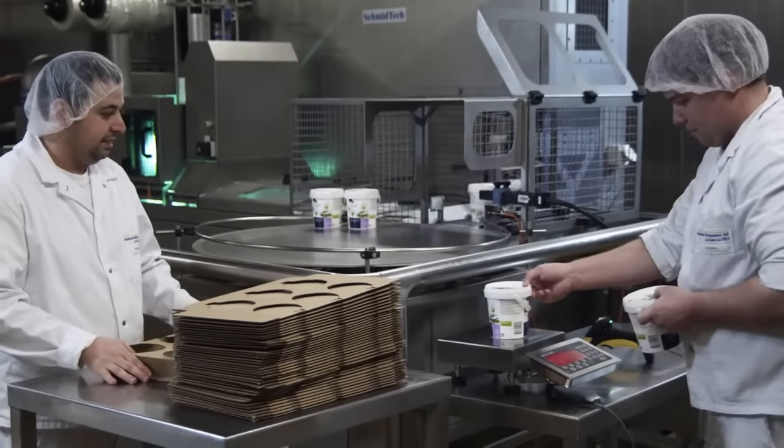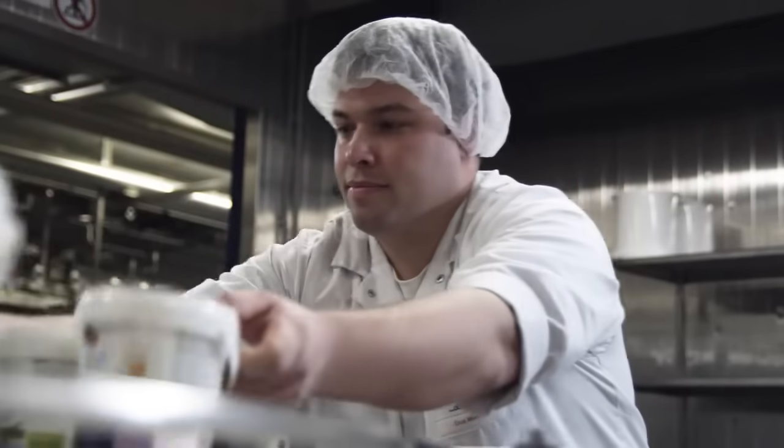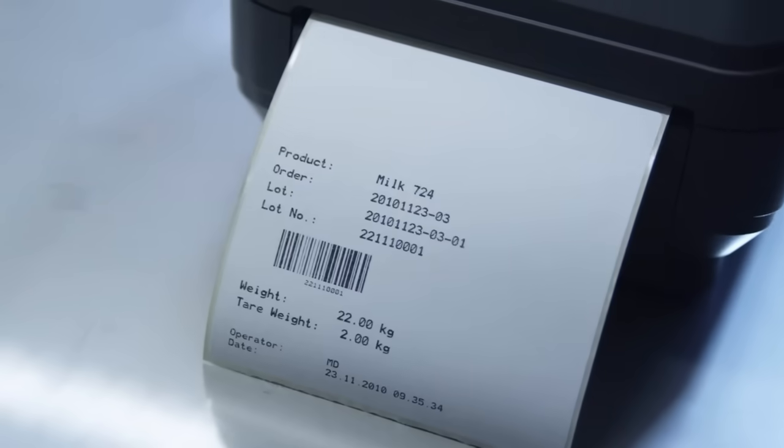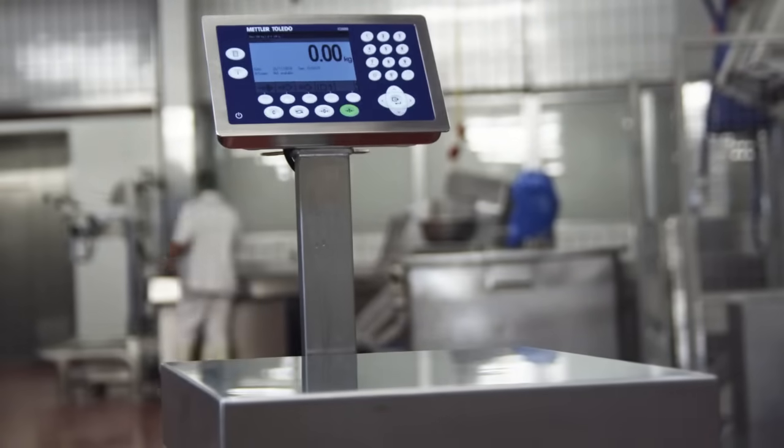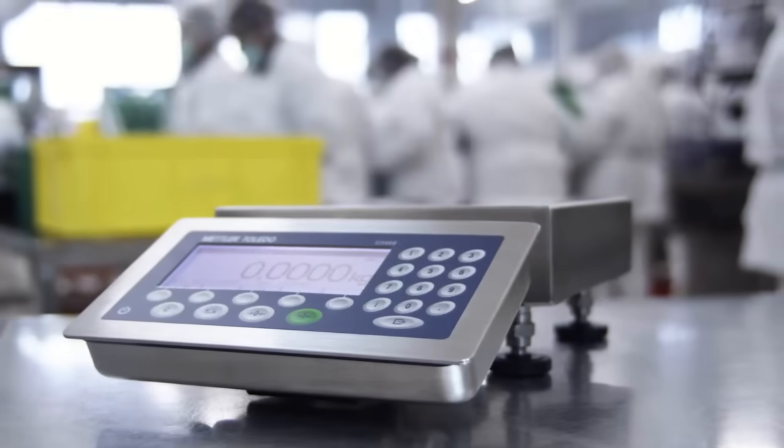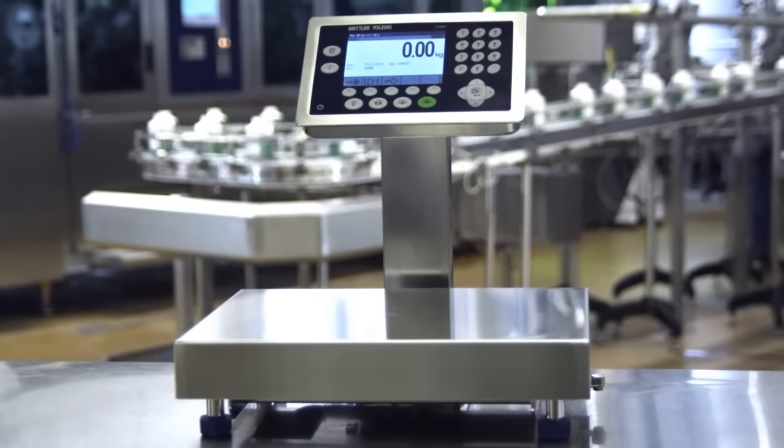Connecting barcode readers and printers turn the ICS scales into ideal identification points for tracking and tracing. The ICS scale family by Mettler Toledo, designed to speed up production where hygiene counts.